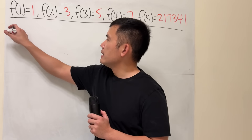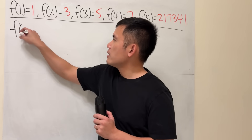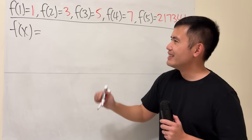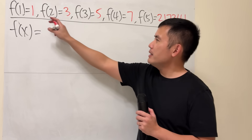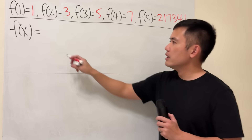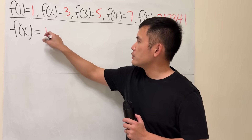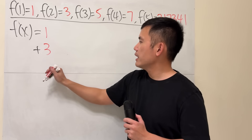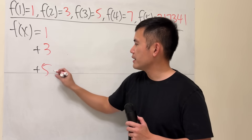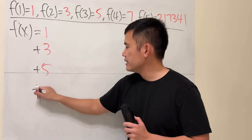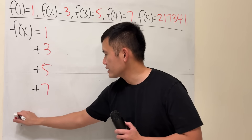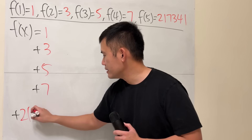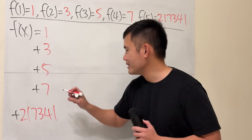This method is by Lagrange. We start off by saying f of x. Pay attention to the outputs. The first output is 1, and then we want 3, then the next one is 5, then 7, and then the last one: 1, 2, 1, 7, 3, 4, 1.